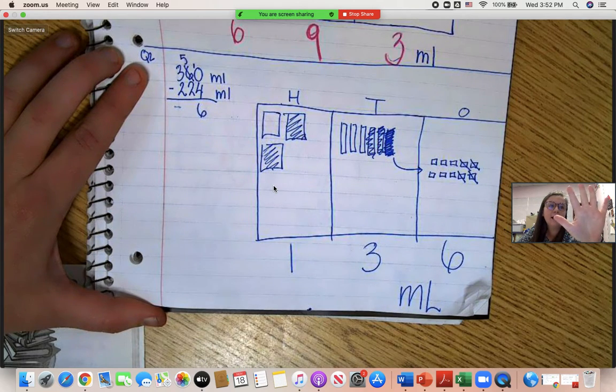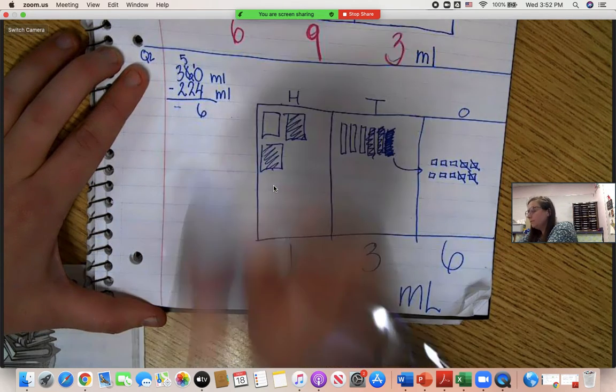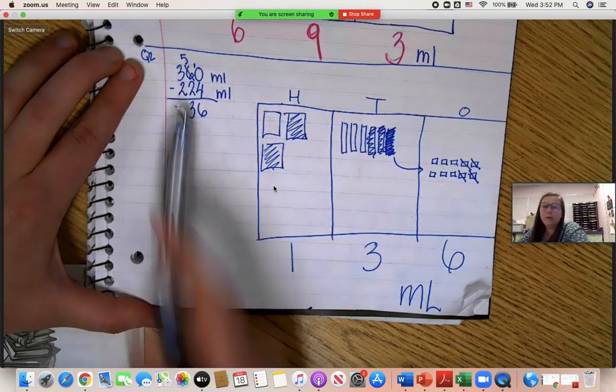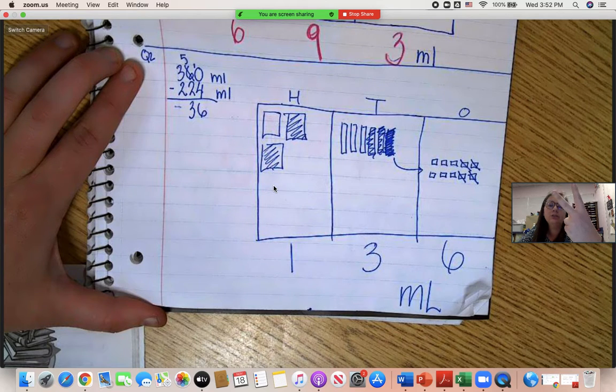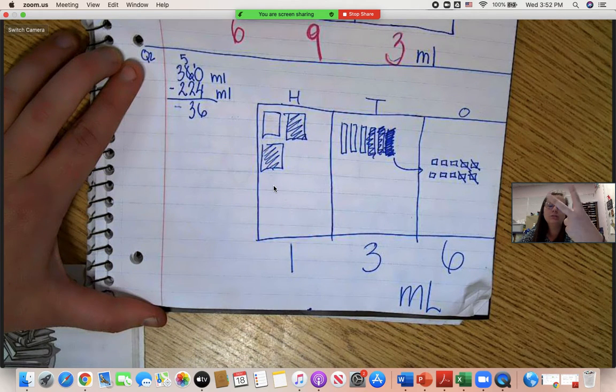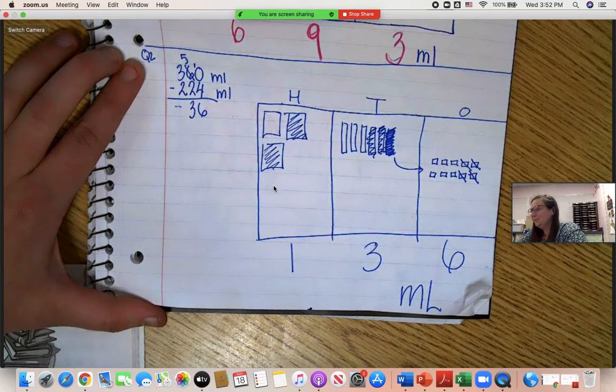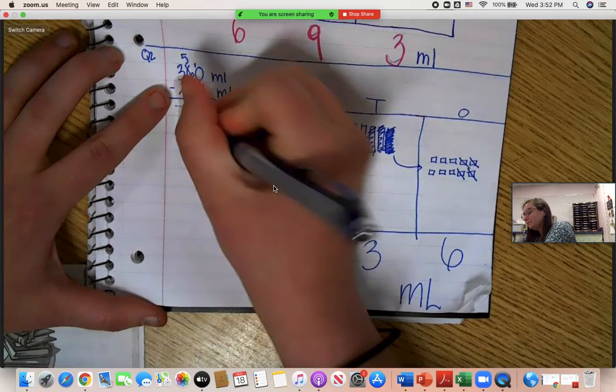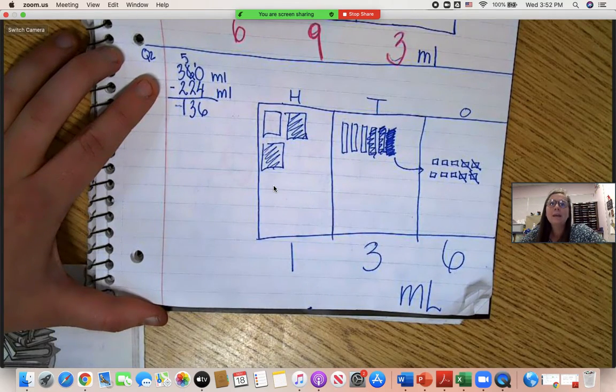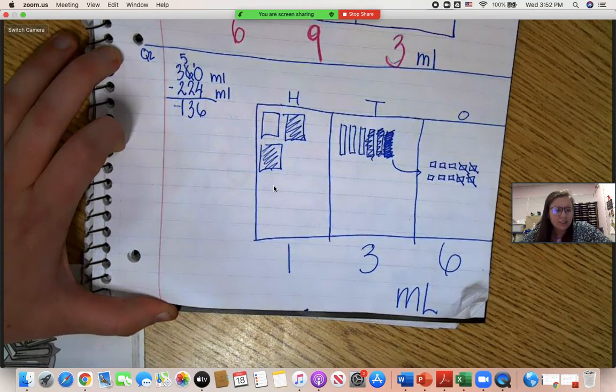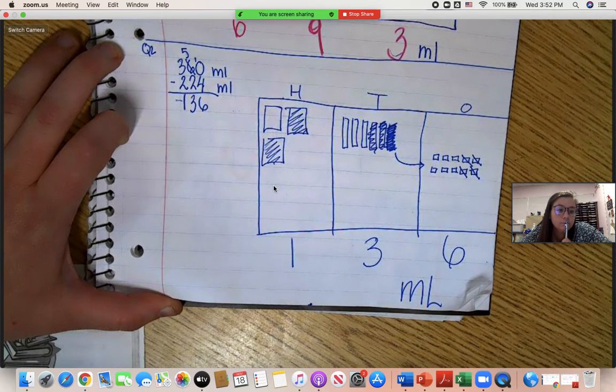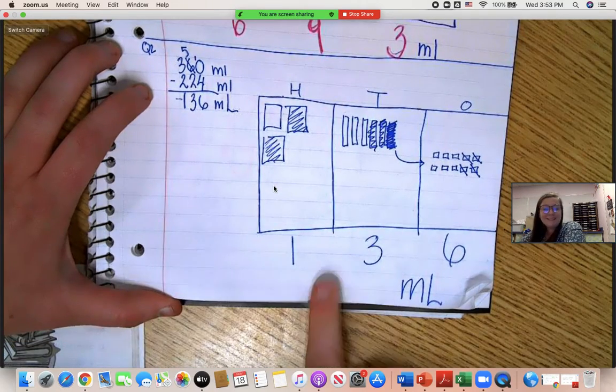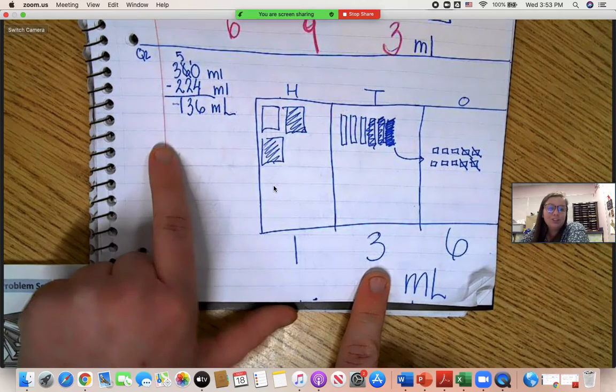Five minus two. Five take away two. Three left. So far we're doing good there. Three take away two. Three take away two. Oh, two. Goodness. Is one. I had a hard time moving my fingers there. 136. 136 what though? So, milliliters, 136 milliliters. We got the same answer, just in different ways.